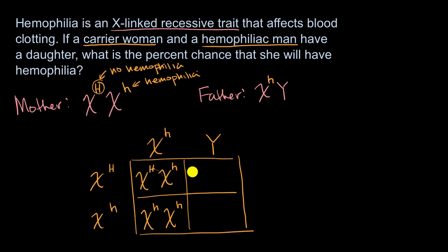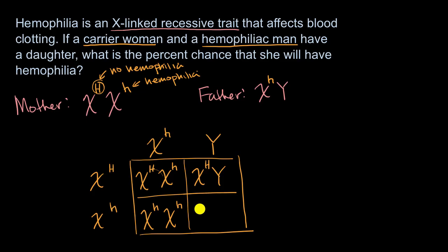The third scenario is the X chromosome from the mother without the hemophilia allele — the non-hemophilia allele — and the Y chromosome from the father. And the fourth scenario is the X chromosome from the mother that has the hemophilia allele and the Y chromosome from the father.